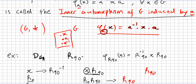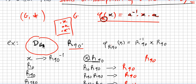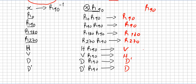This is the action of the inner automorphism of D4 induced by the rotation of 90 degrees — that is, a = R90, and phi_a(x) = a⁻¹ · x · a equals the inverse rotation times x times the 90-degree rotation. This gives us the complete table for the inner automorphism of D4 induced by the 90-degree rotation.